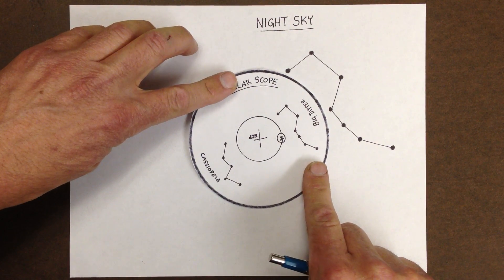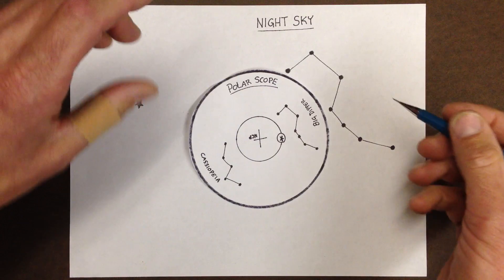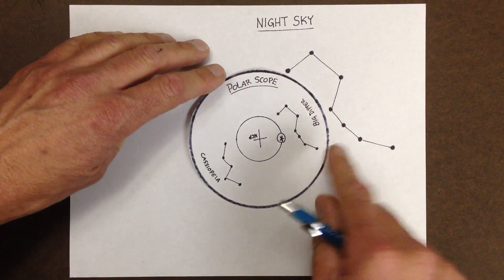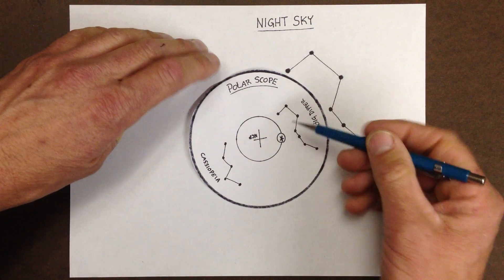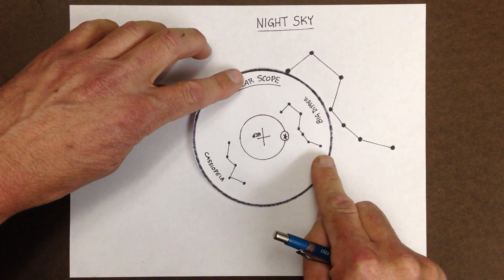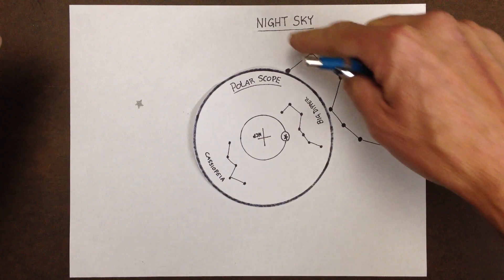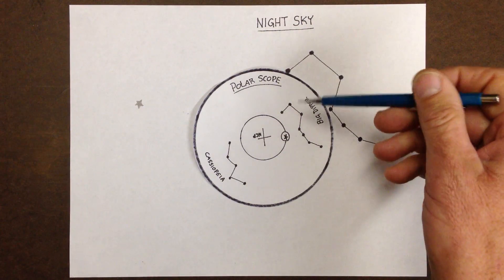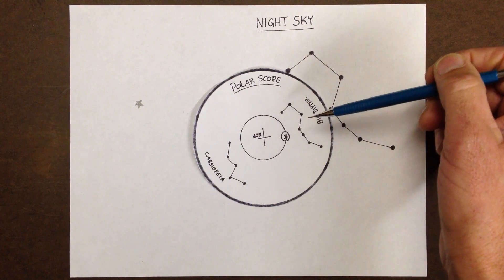What helps me when I do this is I will adjust the image, just like the Big Dipper right here. I will get as close as I can to what I see in the night sky, and I will look through the polar scope with my left eye.